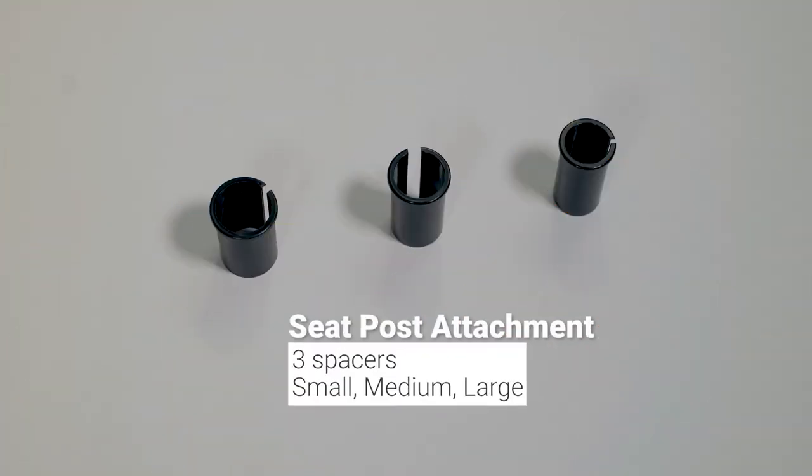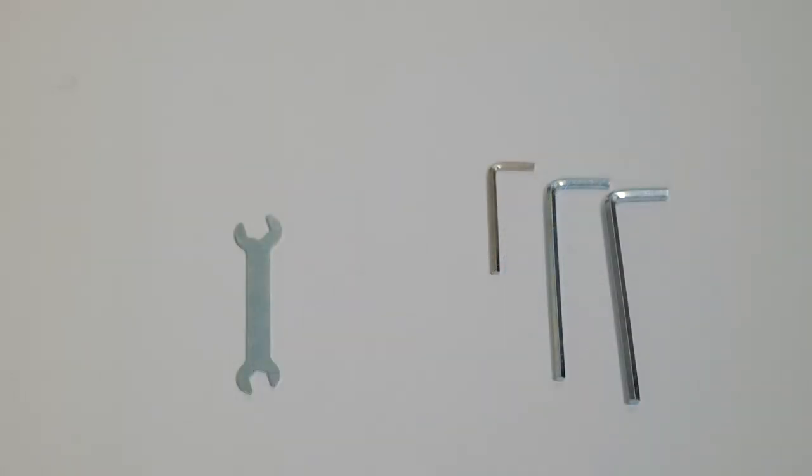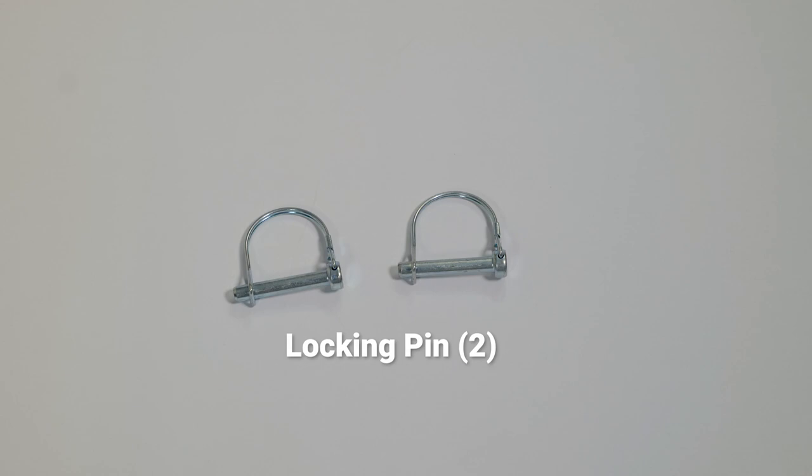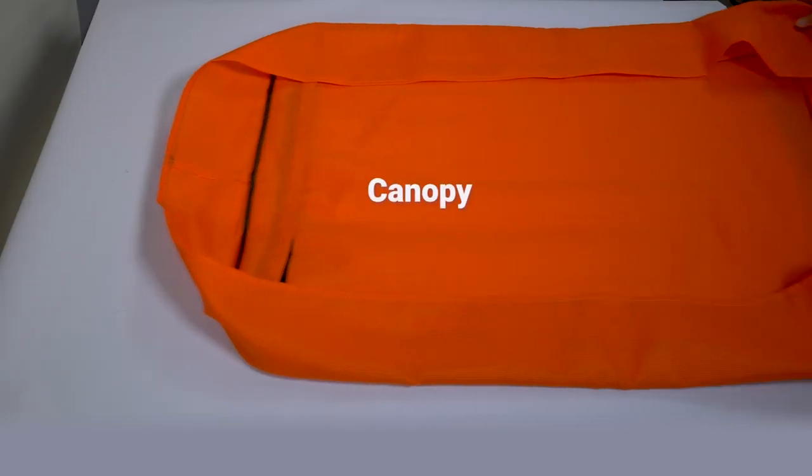Parts include three seat post attachment spacers, a seat clamp short elbow, a wrench, three allen keys, two locking pins, the canopy frame, and the canopy.